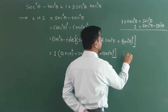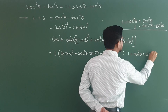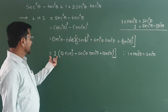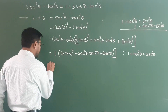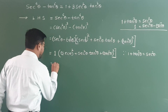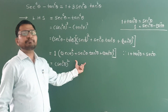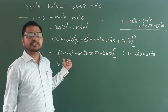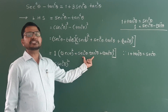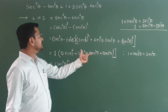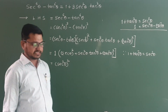We will use the formula 1 plus tan square theta is equal to sec square theta. 1 multiplied by 1 is again that quantity. Now look — here sec square theta bracket square plus sec square theta into tan square theta plus tan square theta bracket square. Does this look like A plus B bracket square? A square is there, B square is there. But the middle term we need is 2AB.